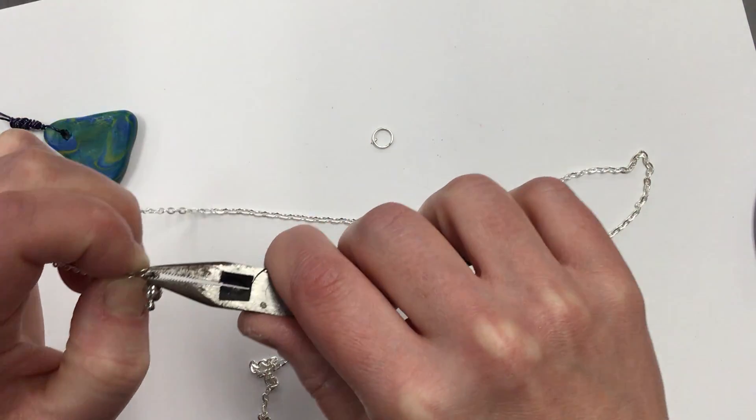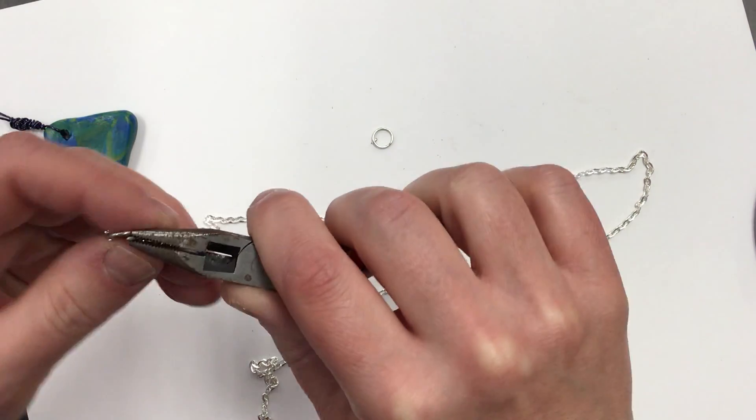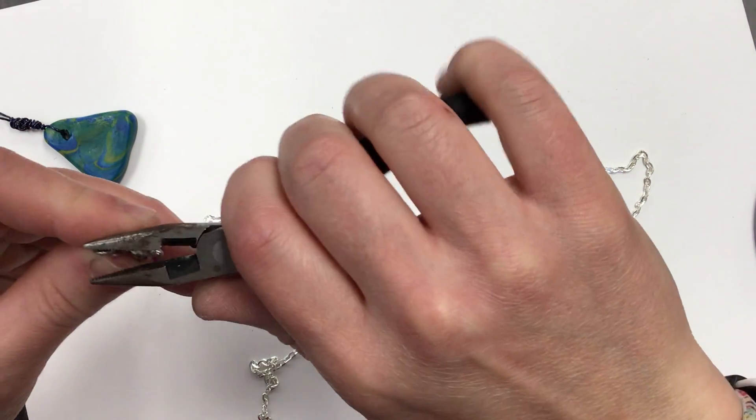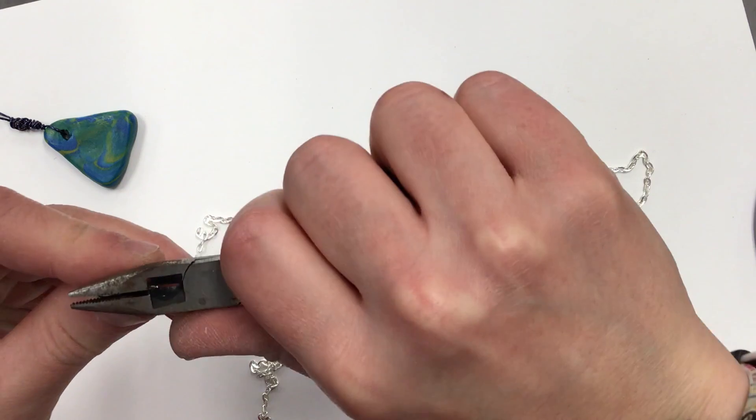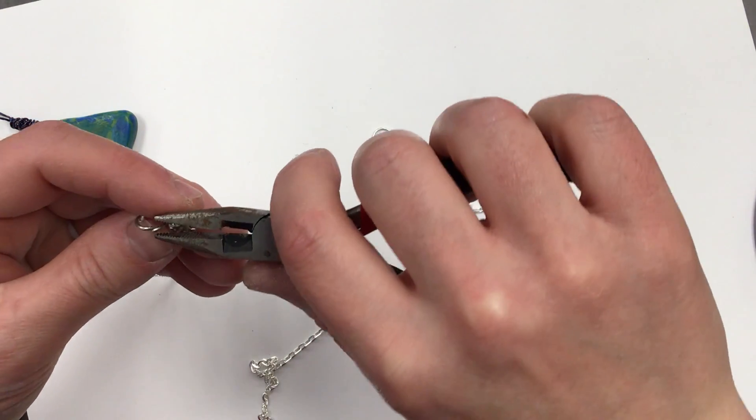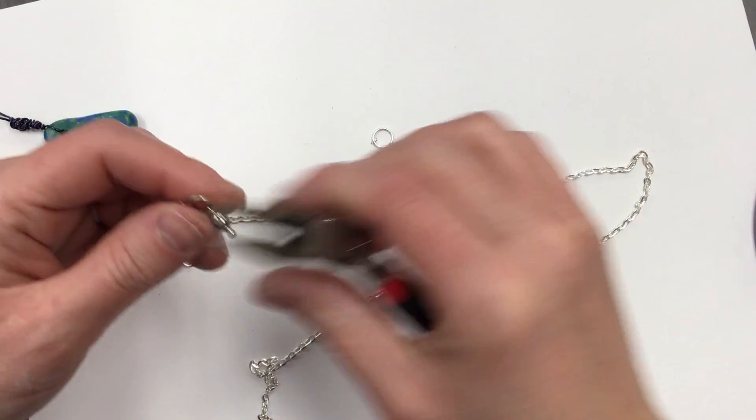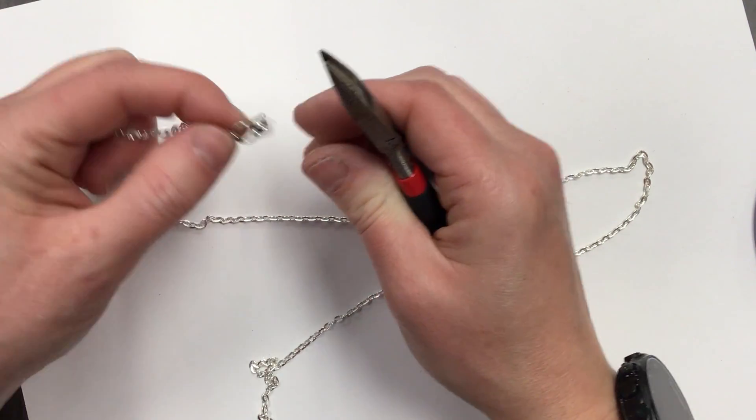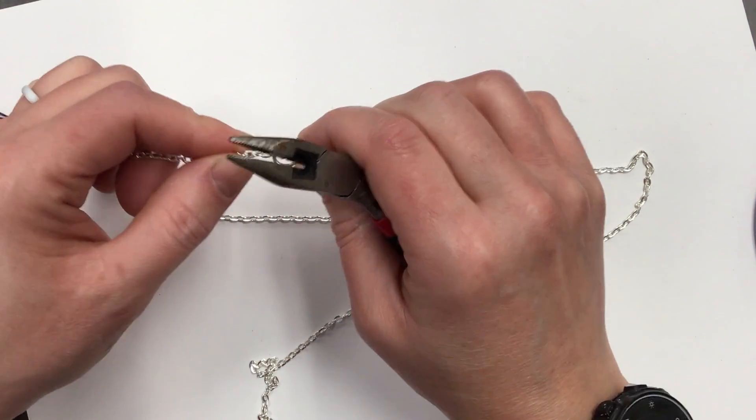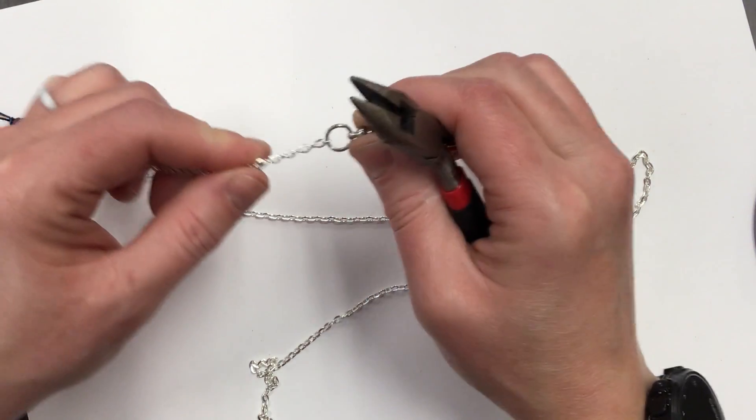Now, I need to make sure it closes all the way, so I may have to do kind of some extra pressing and some extra movement to make it really close. If it doesn't close easy, ask for some help if you need it. Now that jump ring attached to this fastener means that now my chain and my fastener are connected together.